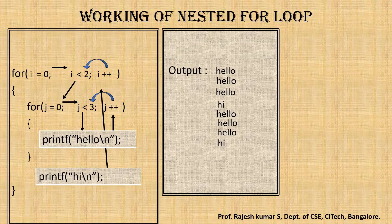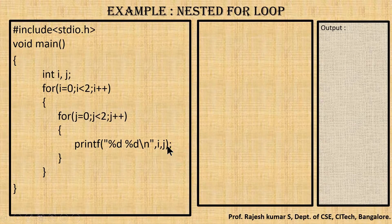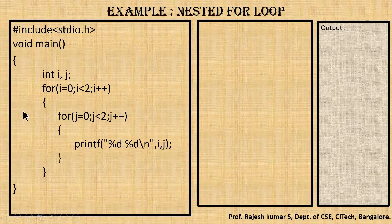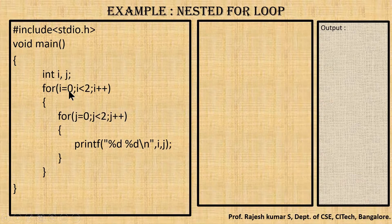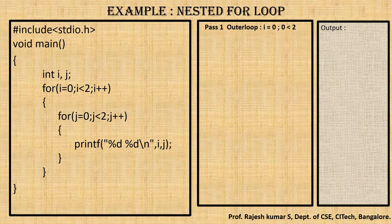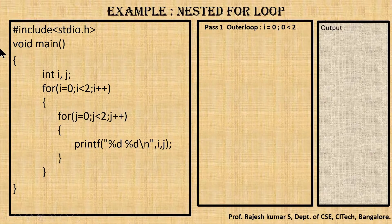That is the working principle of nested for loop — only when the outer for loop condition becomes false do we exit. Now let us see more examples. In the first example, I'll be printing i and j values. The program starts with the #include header file and void main with open and closed braces. I declare variables i and j. The outer for loop initializes i equal to zero. In pass one, i is zero — zero is less than two — the condition is true.